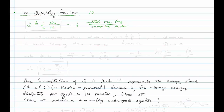Think about this for a moment. If there's no damping, then alpha goes to zero. Remember, alpha for the series RLC is one half R over L. So if there's no damping, there's no resistance, alpha goes to zero, and therefore Q goes to infinity. If there's much damping, alpha goes to infinity and the quality factor goes to zero.